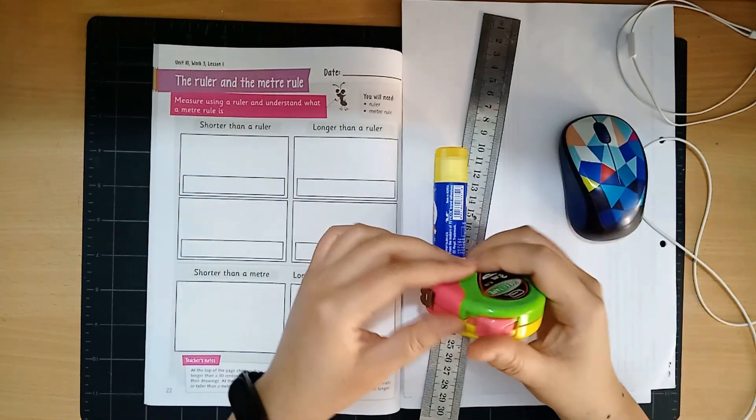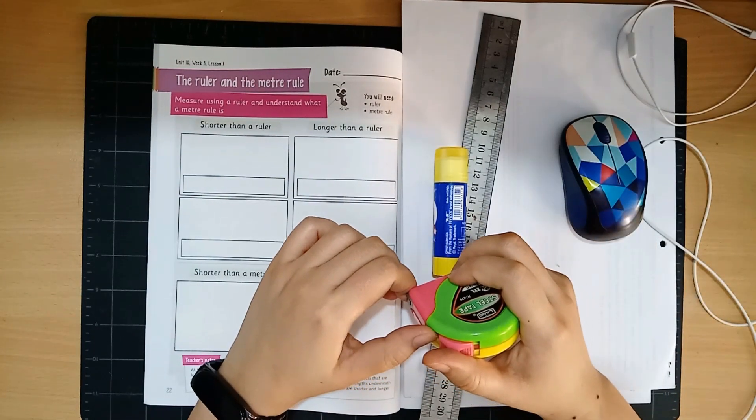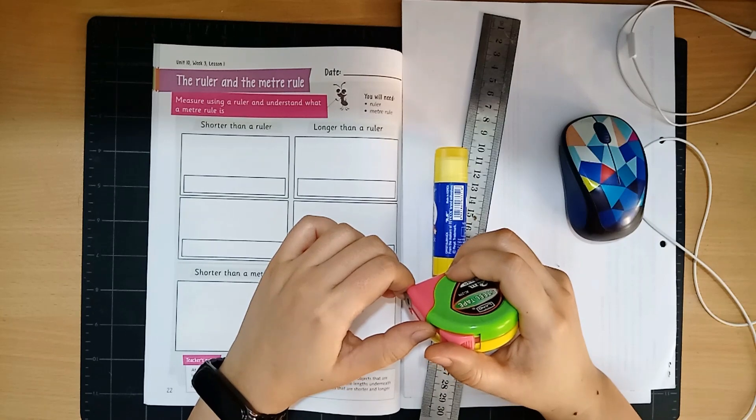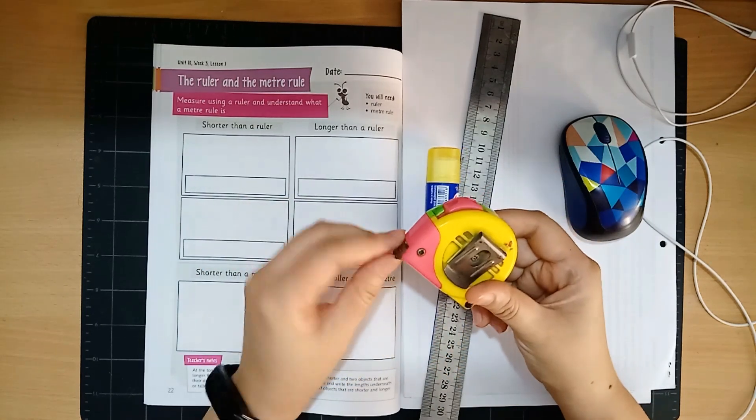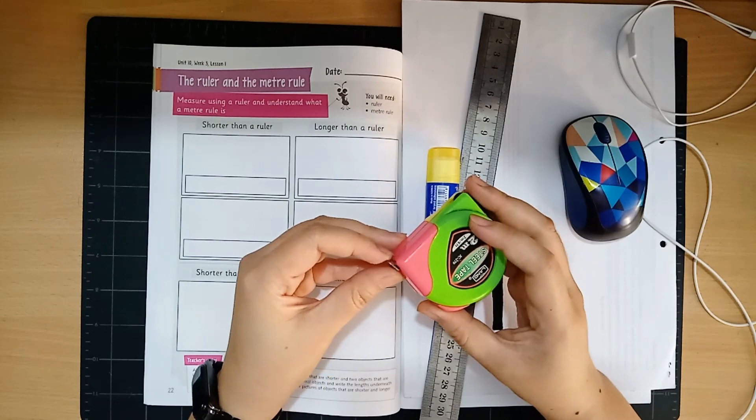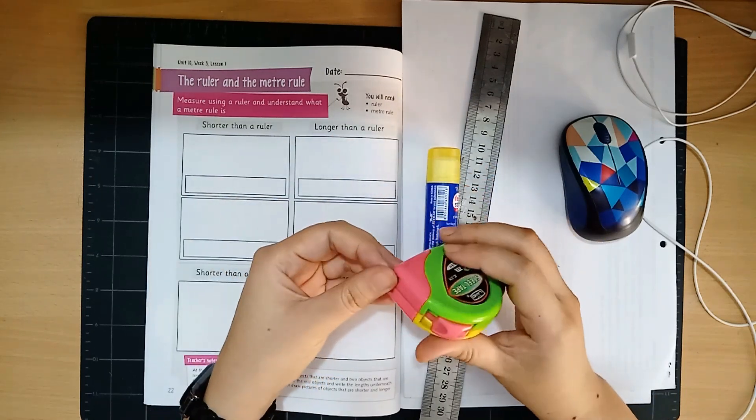So because we are learning at home, I guess you won't have a meter ruler. You can use something like this. You can ask your parents to lend you something like this and ask for their help.